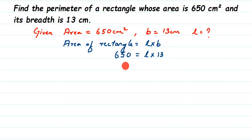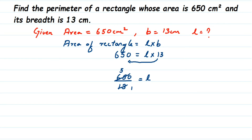Since 13 is under multiplication, when you send it to the other side it goes to division: 650 divided by 13 equals length. You can cancel 650 and 13 directly — 13 times 5 is 65, cancel that, and bring down the 0 — so length equals 50 centimeter.